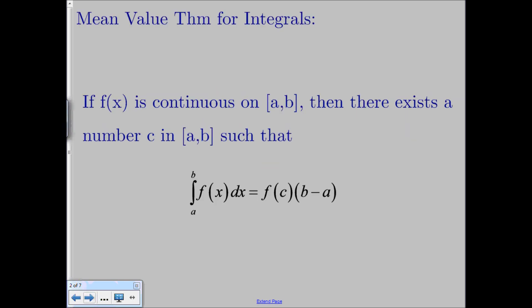So before we can talk about the average value of a function on an interval, we first have to talk about what the mean value theorem for integrals is. We already had a mean value theorem back with derivatives, so now we're going to have one for integrals. What this theorem says is that if f of x is continuous on the closed interval from a to b, then there exists a number c between a and b such that the integral from a to b of f of x dx equals b minus a times the function value at c.